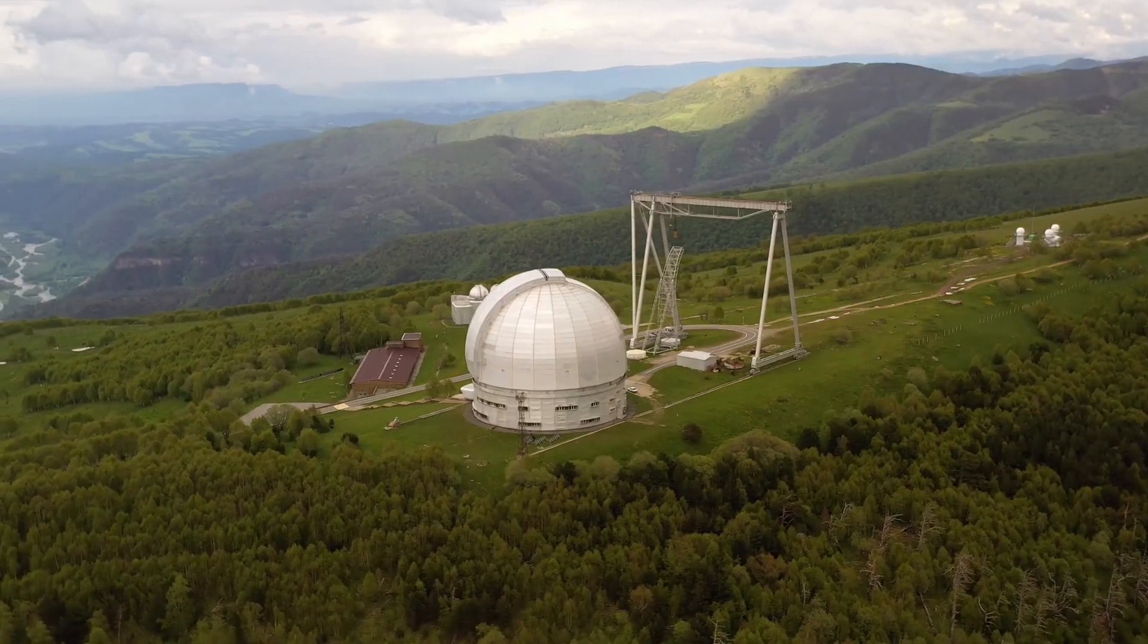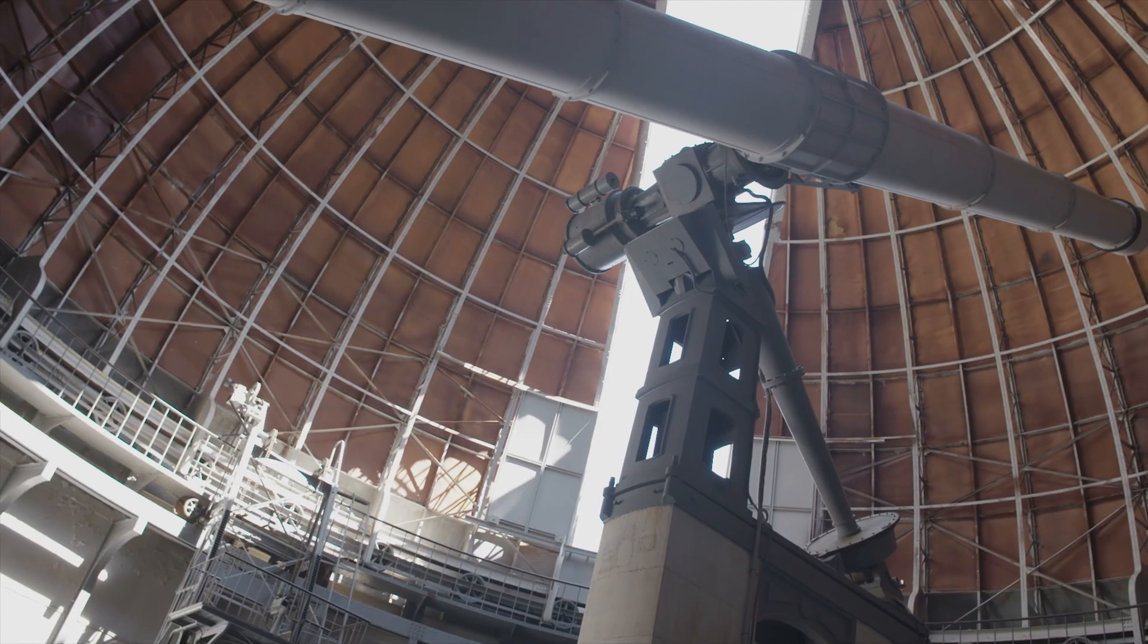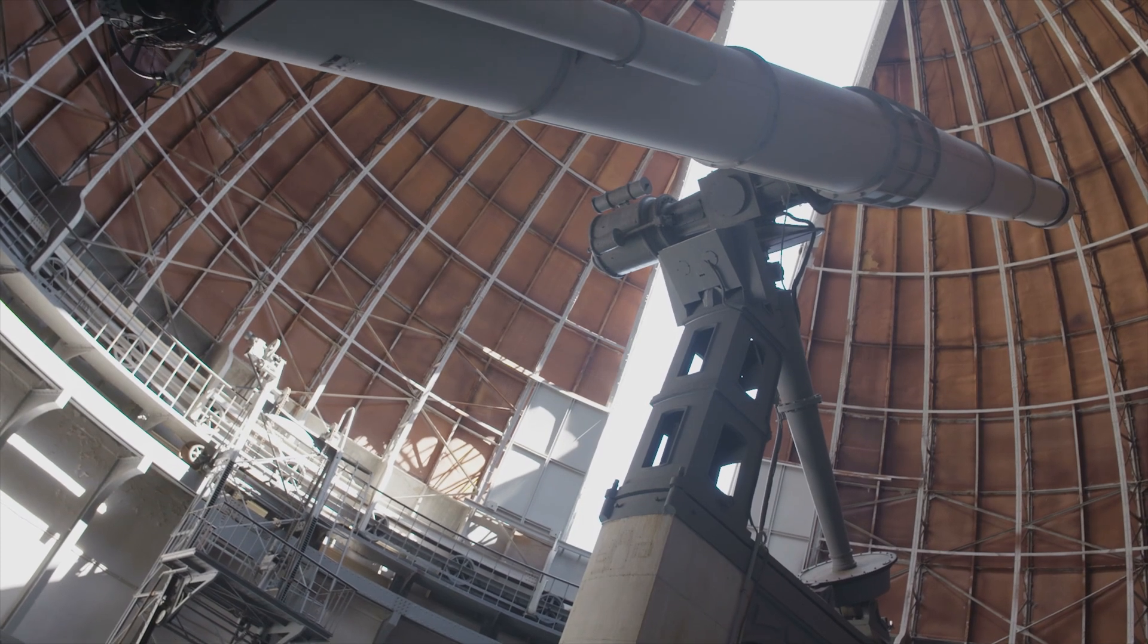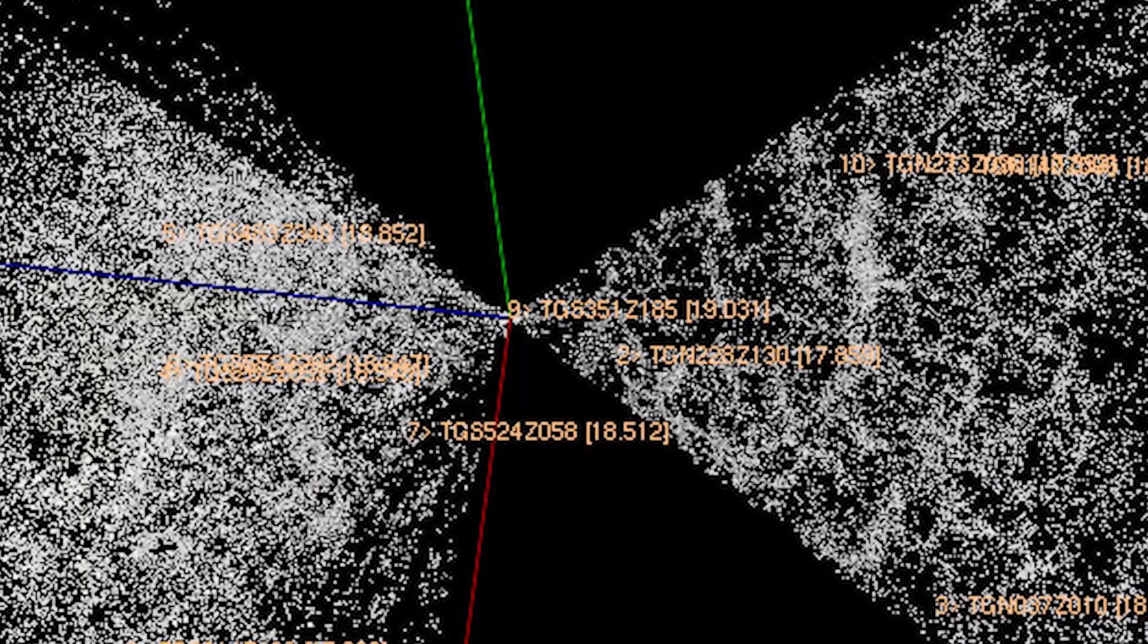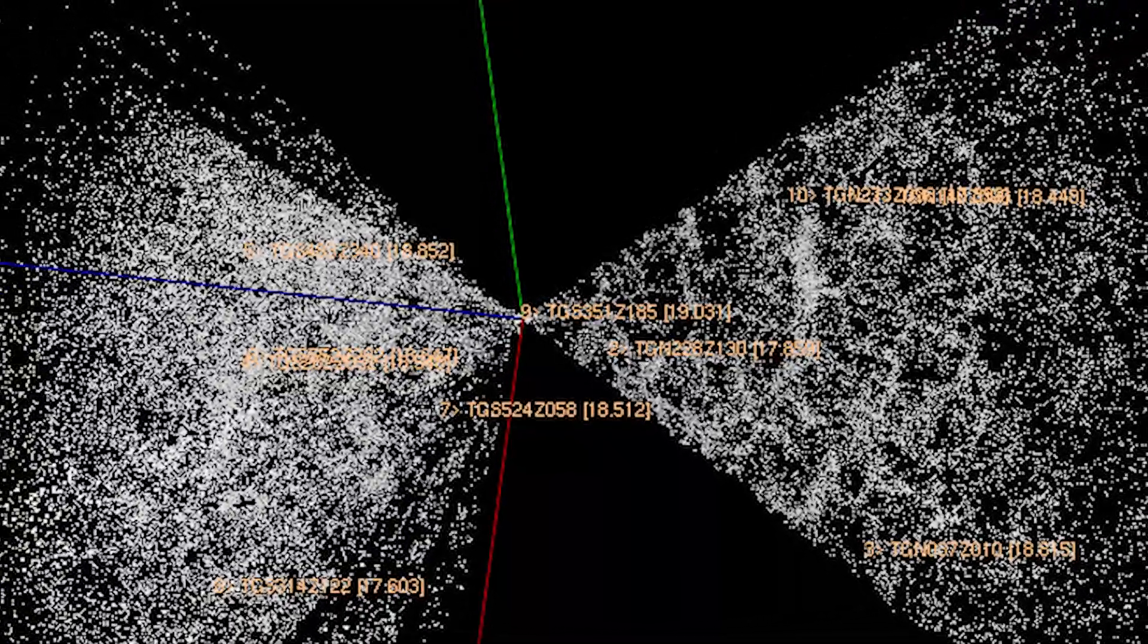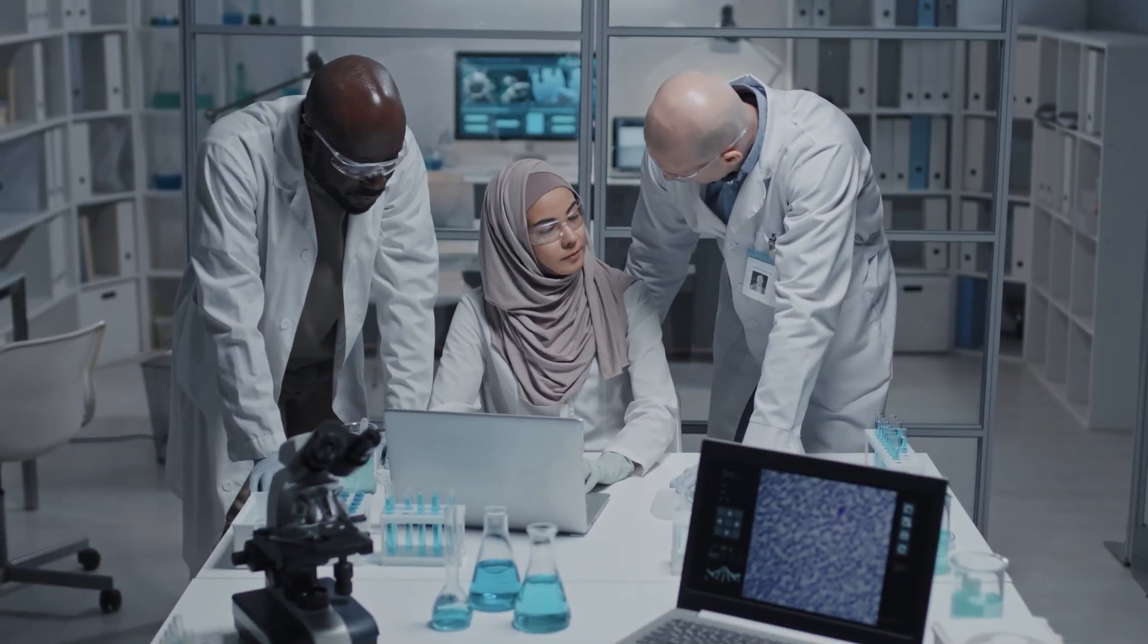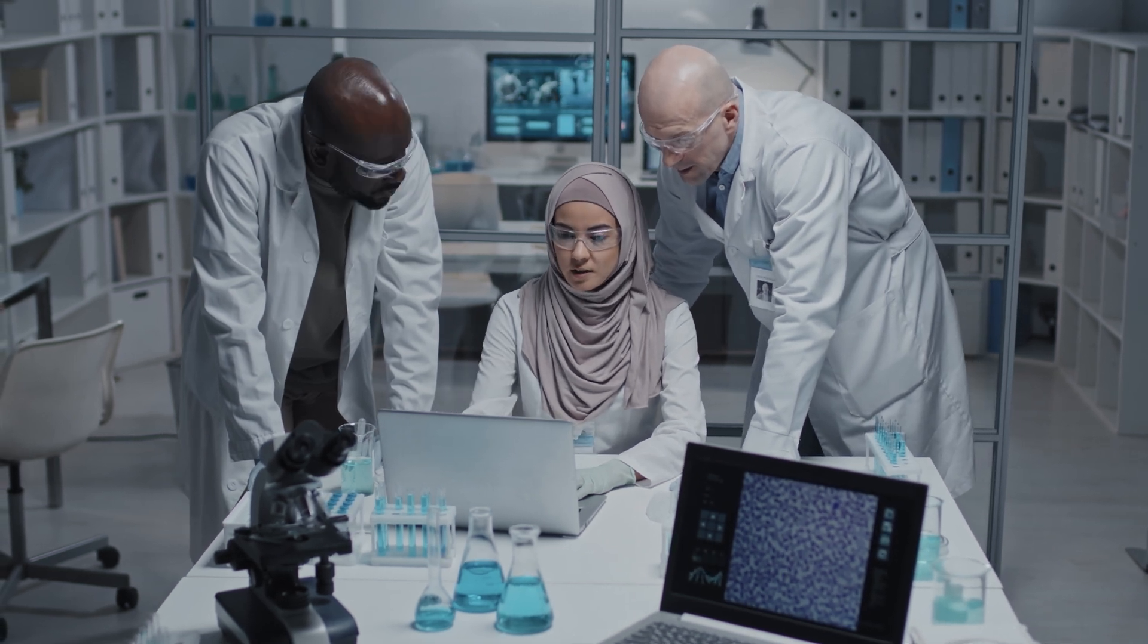The discovery of the Boötes Void was relatively recent in astronomical terms. Robert Kirschner and his team of astronomers first identified it in the mid-1980s. Using redshift surveys to study galactic distributions, they were taken aback when they encountered a region with a startling absence of galaxies.